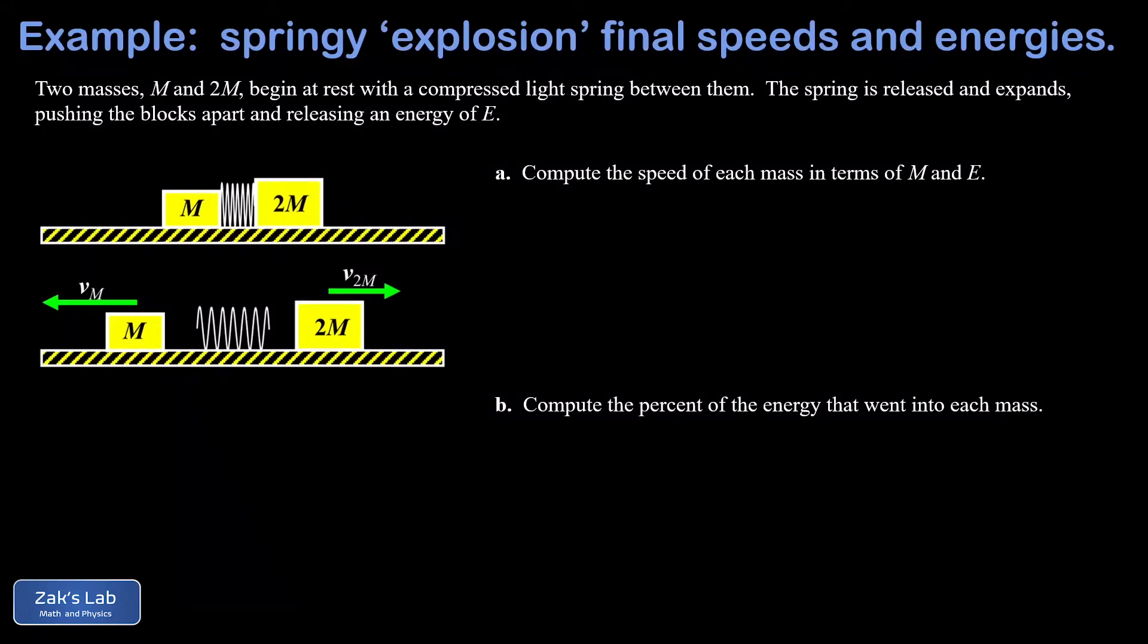In this video we're solving a momentum and energy problem where we're starting with a mass of m and a mass of 2m. There's a compressed spring between the two masses and we're told the spring has an energy of E in it. Now that light spring is going to expand and push these blocks apart and they run off with these final velocities vm and v2m.